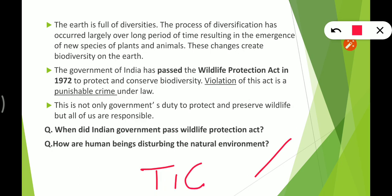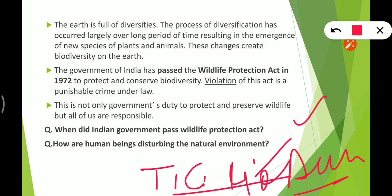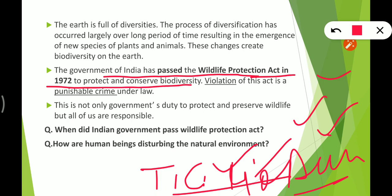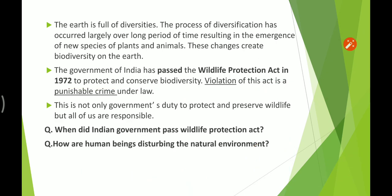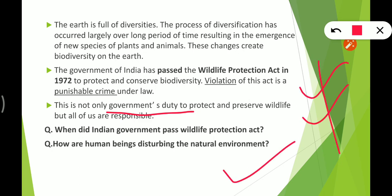Biodiversity includes tigers, lions, deer, and humans. Some species are now extinct or on the verge of extinction, so we need to protect and conserve them. The Indian government passed the Wildlife Protection Act in 1972 to protect and conserve wildlife. Violating this act is a punishable crime. The government has made laws, but it is also our duty to follow them and protect the environment.